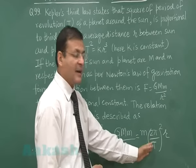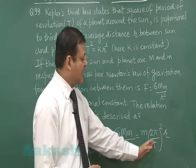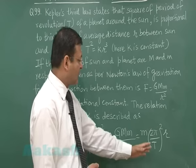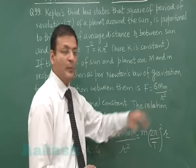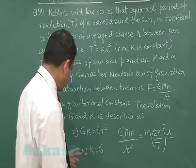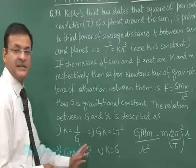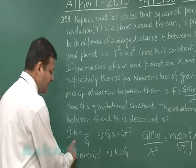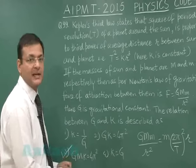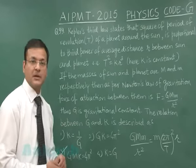Now at the place of T square, in case you substitute this KR cubed, then you will find that K will be appearing here and R cubed will be cancelled out and ultimately you will have GM capital K and that will be 2 pi whole square. So you will find that the option here is the third one supporting your idea and that GMK is equal to 4 pi square. This will be the correct option for the question number 99.